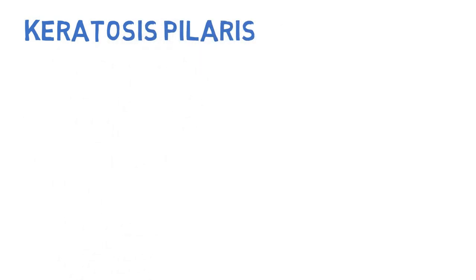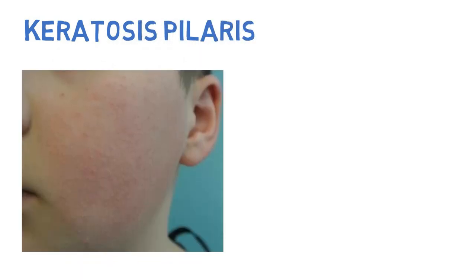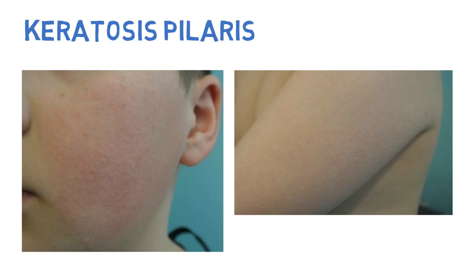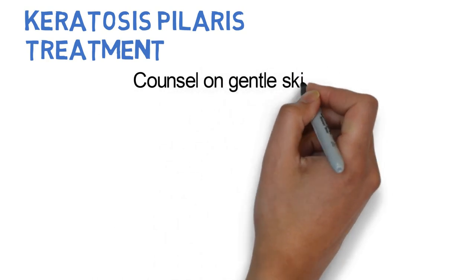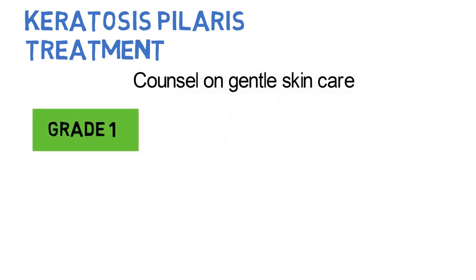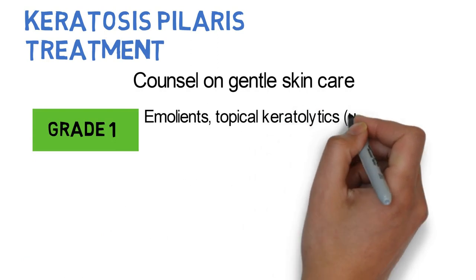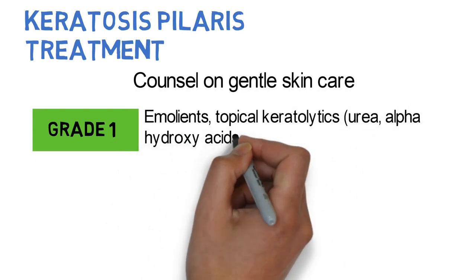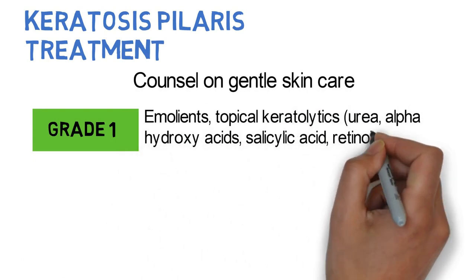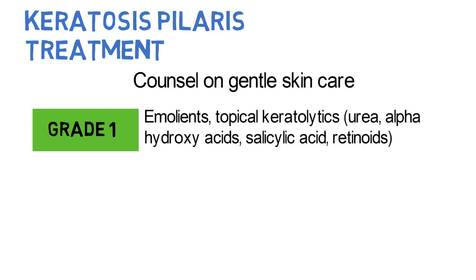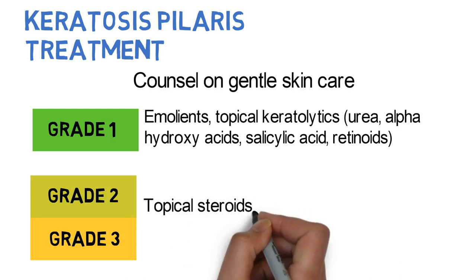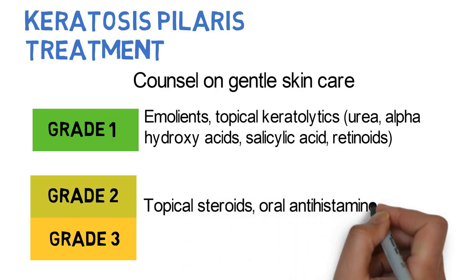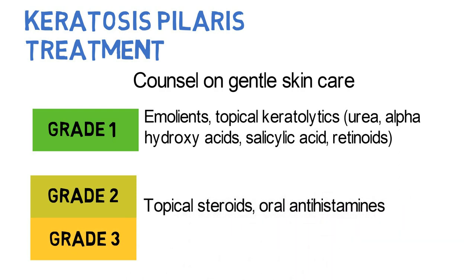Keratosis pilaris presents as diffuse keratotic papules in a generalized distribution and may be accompanied by significant pruritus. Treatment includes counseling on gentle skin care. For grade 1, the patient can use emollients and topical keratolytics such as urea, alpha-hydroxy acids, salicylic acid, and retinoids. For grades 2 and 3, consider topical steroids and oral antihistamines. Keratosis pilaris is generally self-limited.